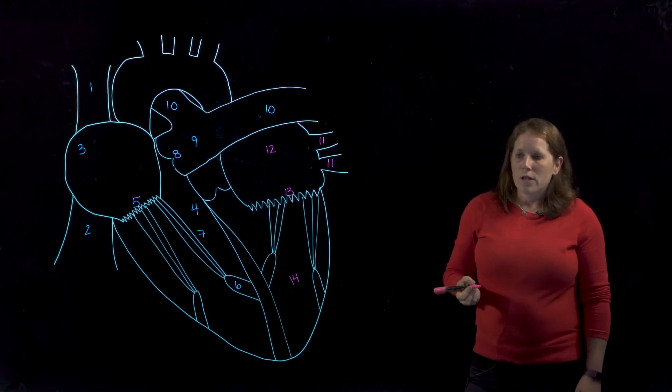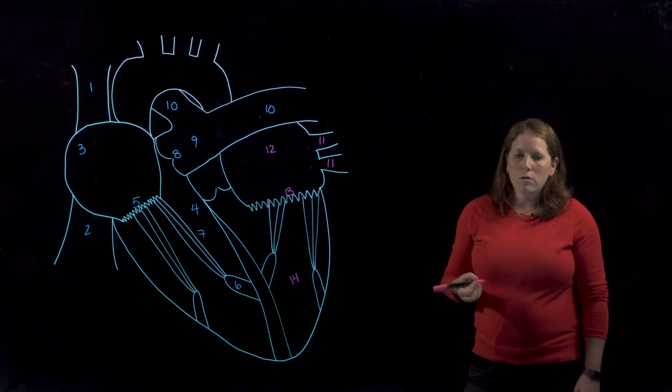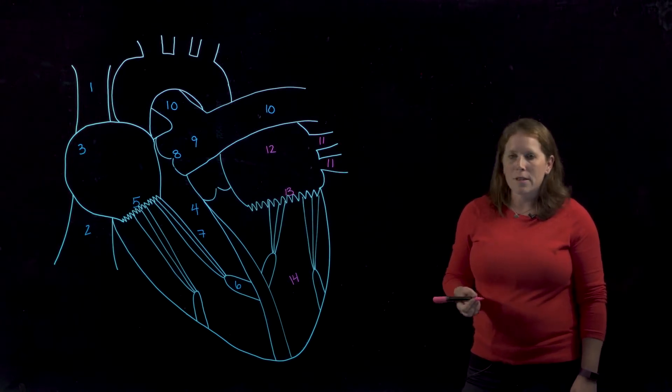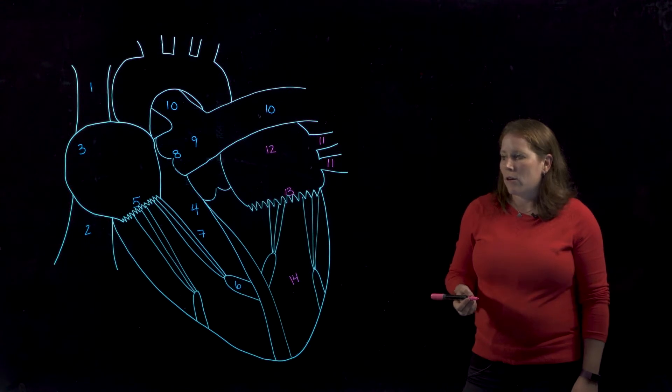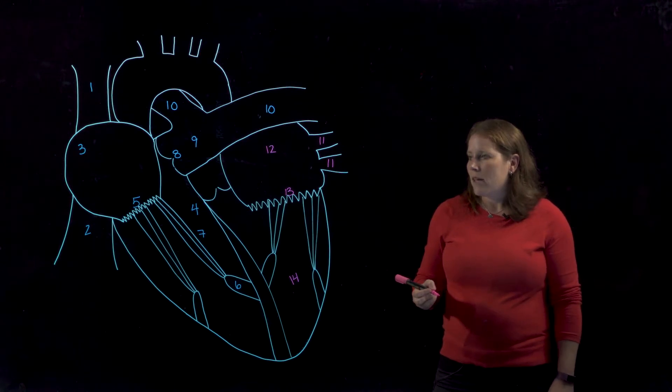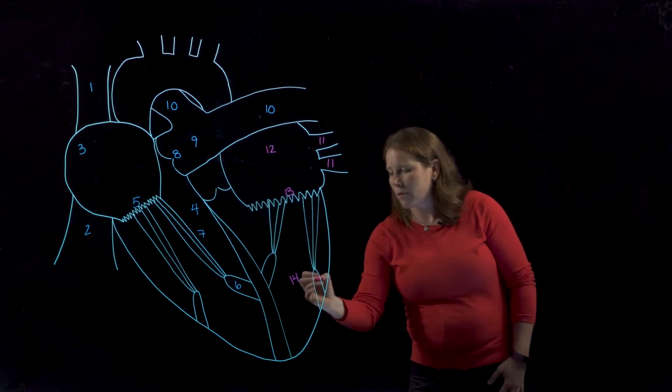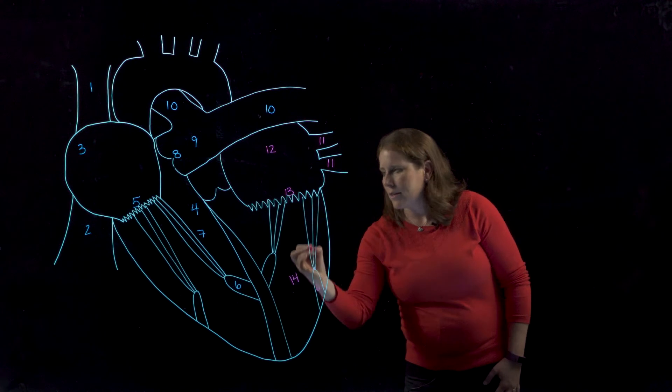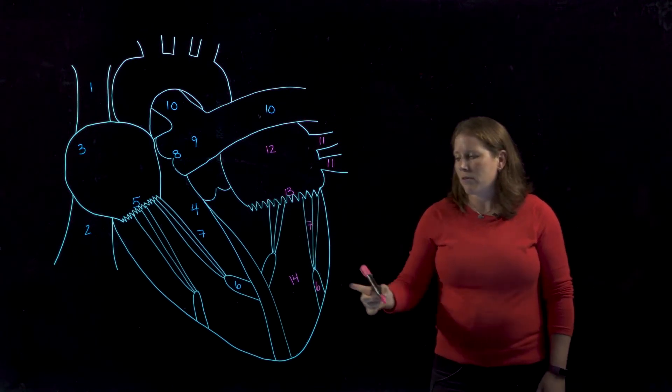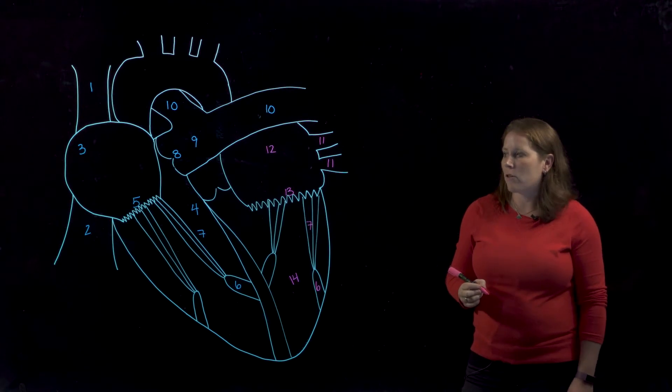This valve, the left atrioventricular valve, also has alternate names that you're responsible for. It can be referred to as the mitral valve and also as the bicuspid valve because it only has two cusps. It does have the same anatomical features as the right atrioventricular valve in terms of having papillary muscles and chordae tendineae.